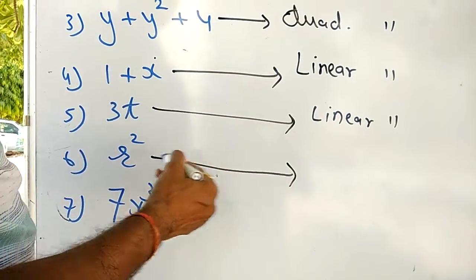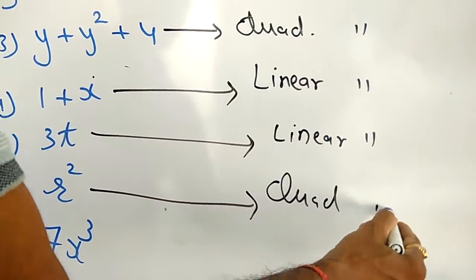Sixth one: r². Maximum power 2, so it is quadratic.